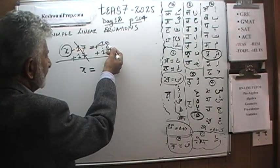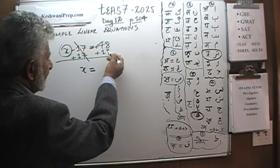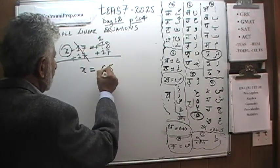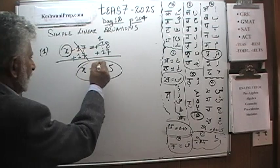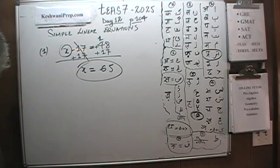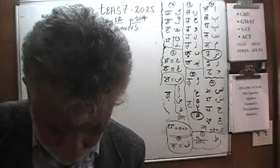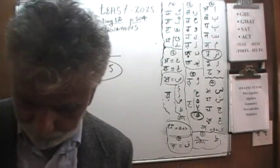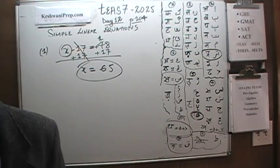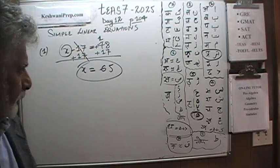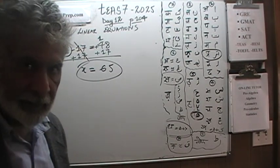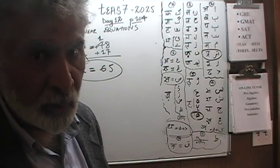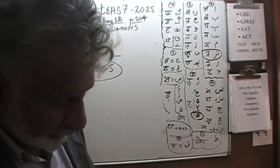On this side, negative 17 and positive 17 are going to cancel each other out, and we are left with only x. The x comes down, the equal sign comes down, and we are left with 48 plus 17, which is 65. So x is equal to 65.